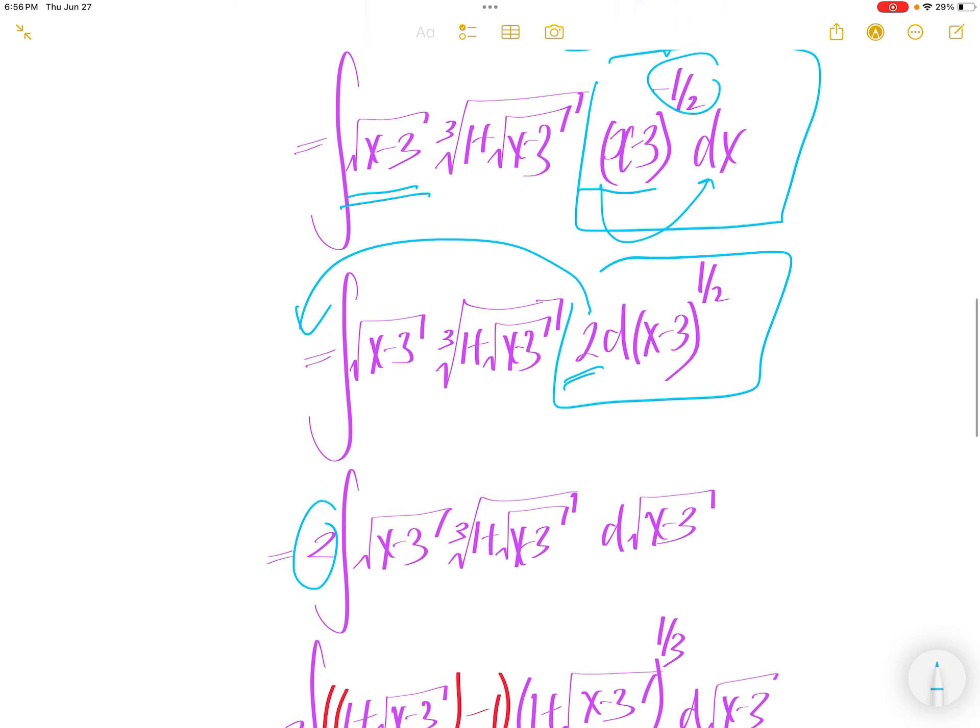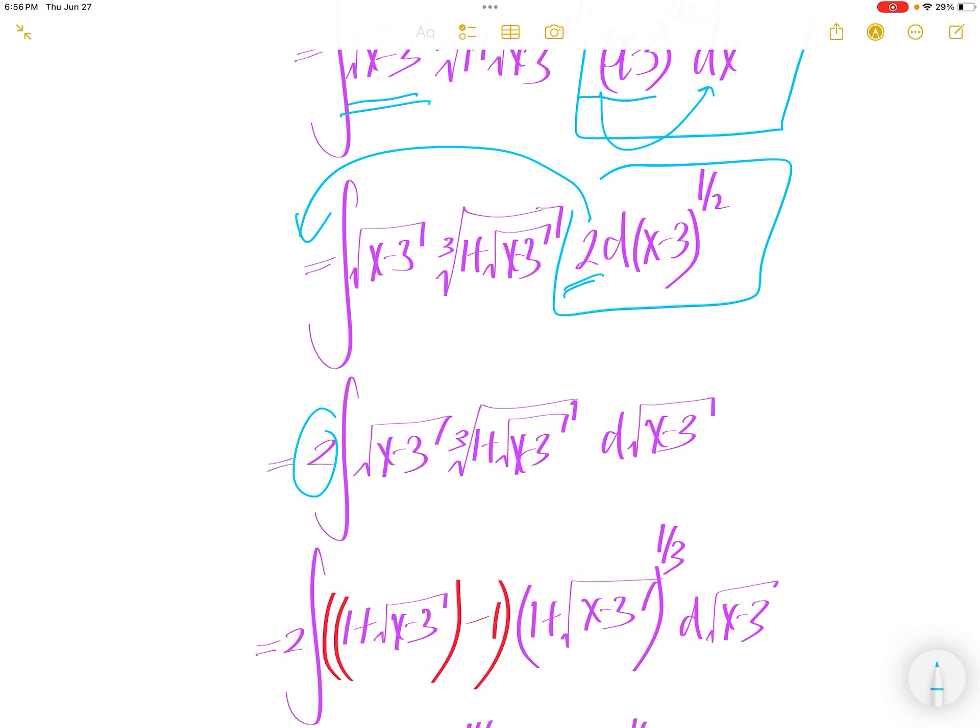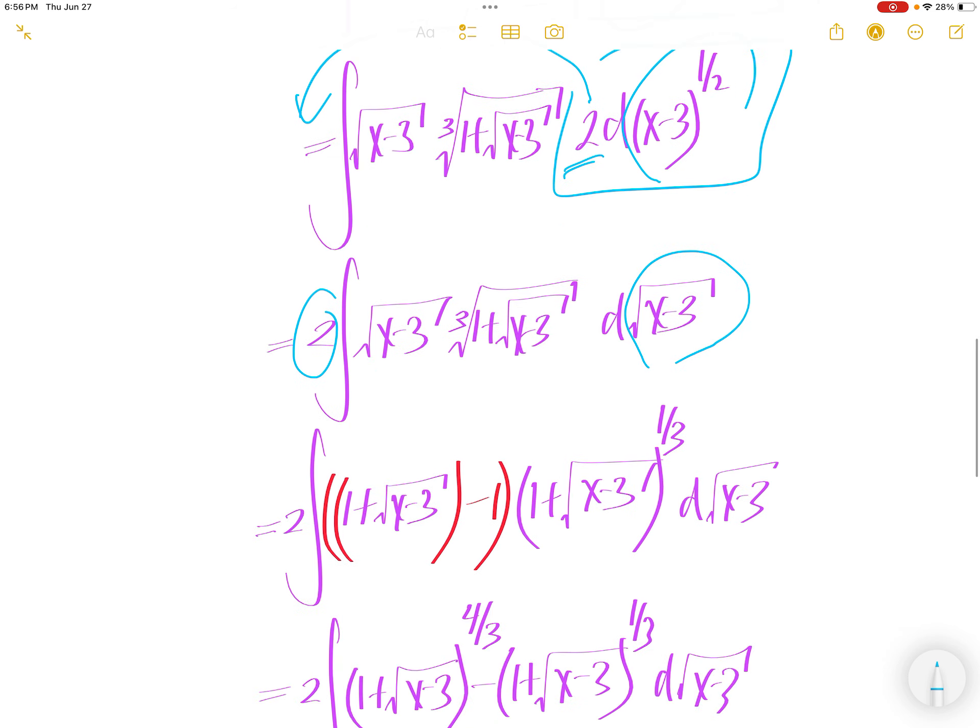Two constants out over here. And then write this as square root x minus 3.